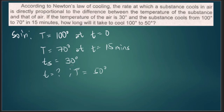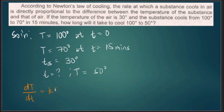Now we have our given. The next thing to do is to determine whether this is a cooling or heating process. As you can see, the substance cools from 100 to 70 degrees — there is a decrease in temperature — so therefore this is a cooling process. We will use the differential equation dT/dt equal to k times (T minus T sub s).